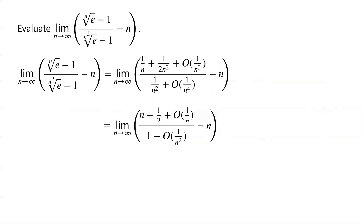As n tends towards infinity, both big O of 1 over n and big O of 1 over n squared tend towards 0. So the fraction tends towards n plus a half. That is, the fraction minus n tends towards a half. That is the answer.